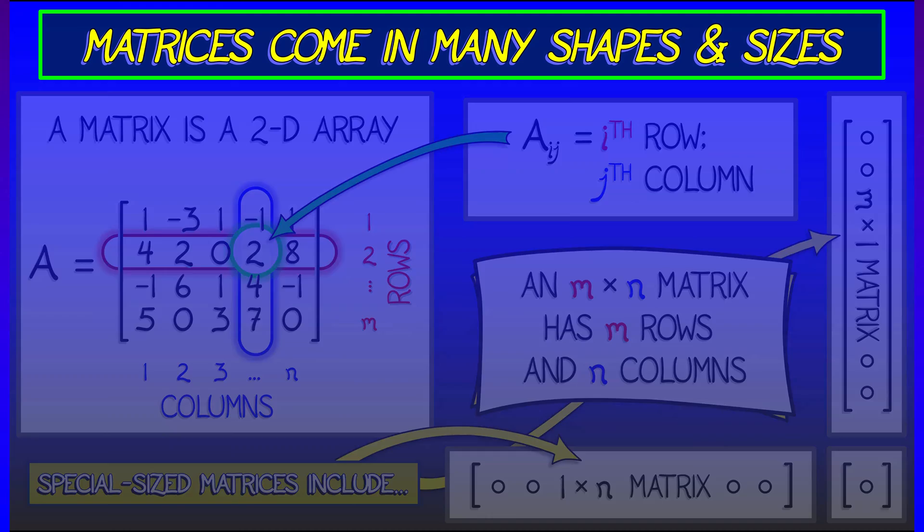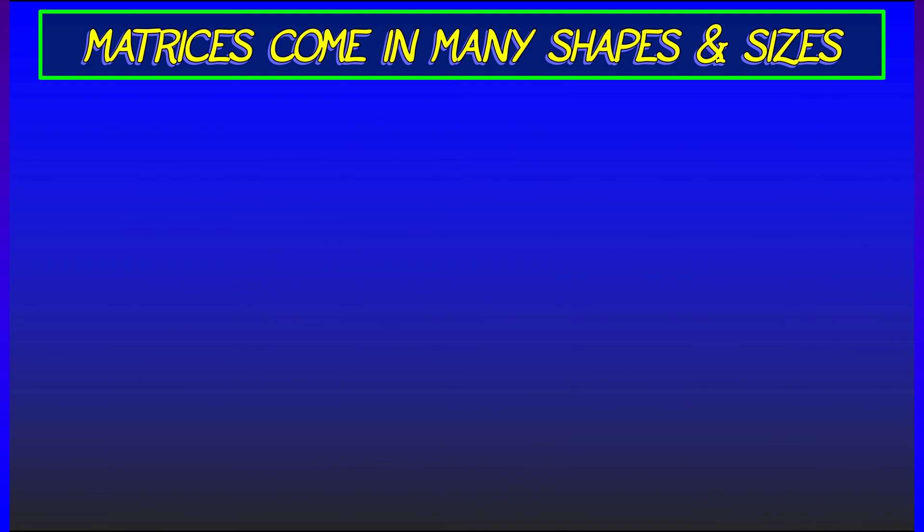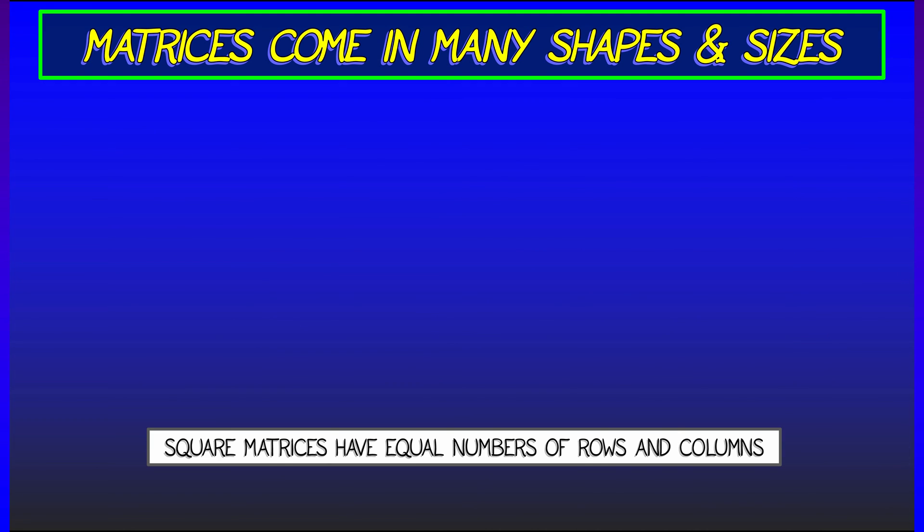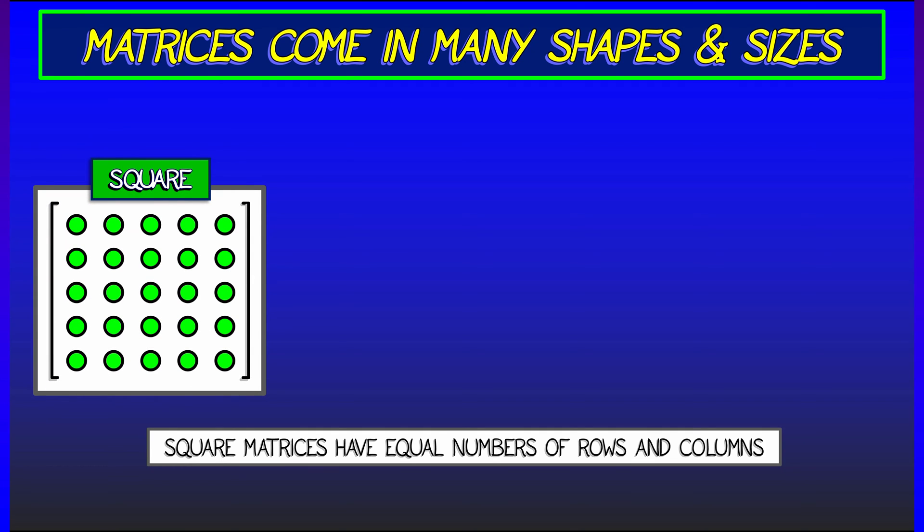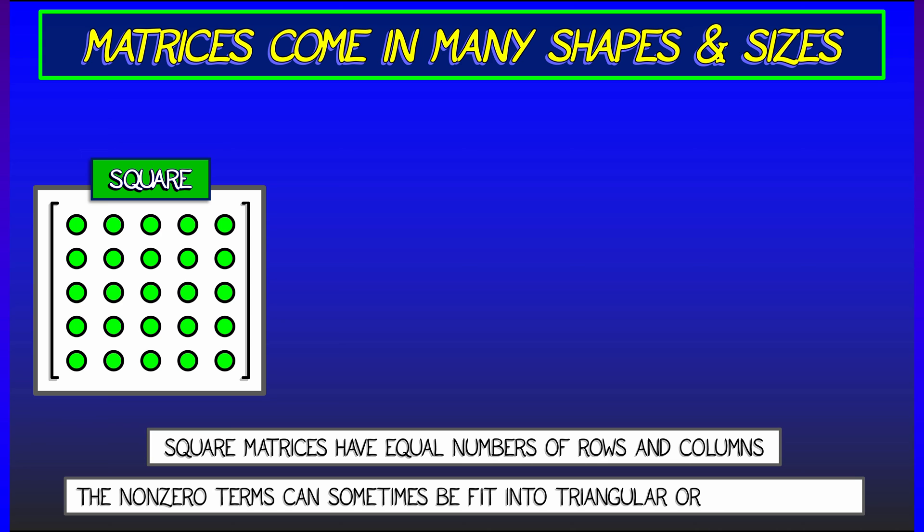There are certain special matrices that have equal numbers of rows and columns. These are called square matrices, and we're going to see these quite a lot in things to come. Within a square matrix,